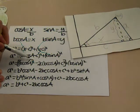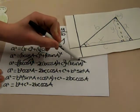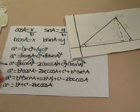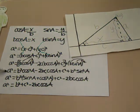Then by distributing the squares and simplifying a bit, we get A squared equals B squared cosine A minus 2BC cosine A plus C squared plus B squared sine squared A.